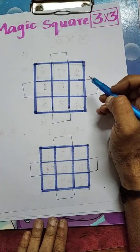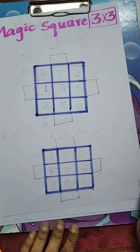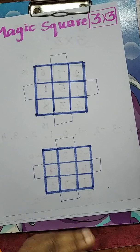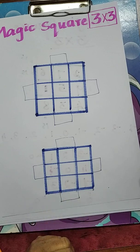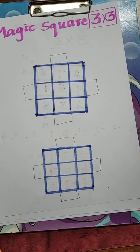Now here we have to write the numbers. What are the numbers we can use? Any integers, natural numbers, even numbers, odd numbers, or multiples of any numbers. But here we have to use any consecutive numbers.